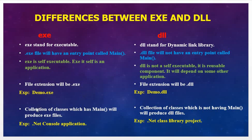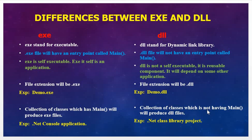The next difference is a collection of classes which has a main method will produce exe files. An example is a dot net console application. Whereas a collection of classes which does not have a main method will produce dll files. An example is a dot net class library project.